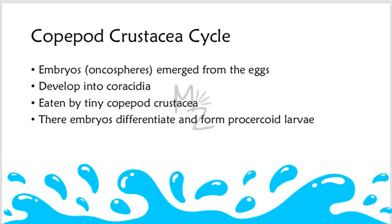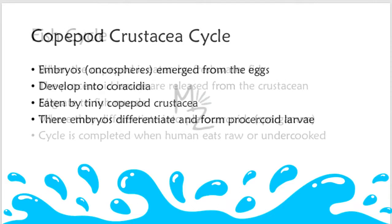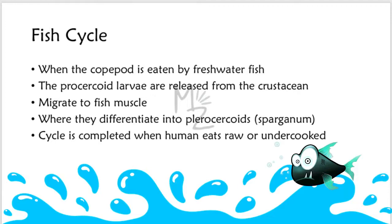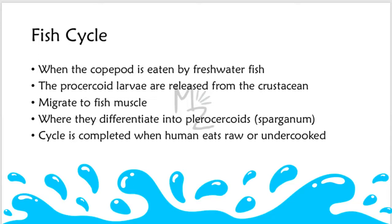Fish cycle: in the body cavity of the copepod, the embryos differentiate and form procercoid larvae. The freshwater fish — pike, trout, and perch — eat the copepod, and the larvae differentiate into plerocercoids in the muscle of the fish, the second intermediate host. The cycle is completed when the raw or undercooked fish is eaten by humans, the definitive hosts.